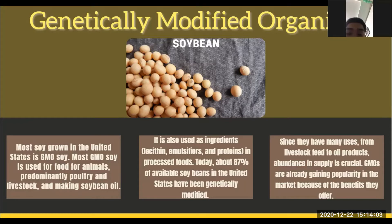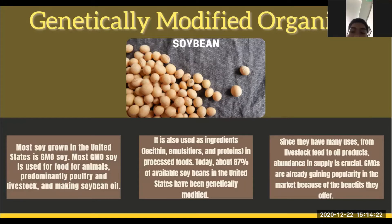GMOs are already gaining popularity in the market because of the benefits they offer. One big example of GMO is usually seen in our processed foods. One big example of this is instant noodles. When you look at the back portion near the ingredients, you can see a sign or information about the allergen information.